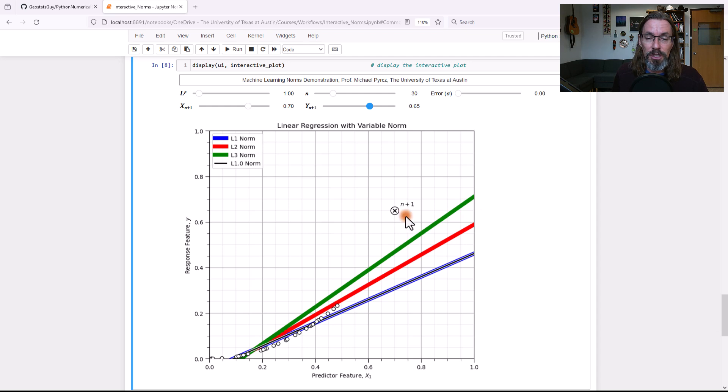Now, look at the L1. The Manhattan norm is pretty robust. It's actually doing a pretty good job of passing through most of the data nicely. It's not so sensitive to this single outlier.